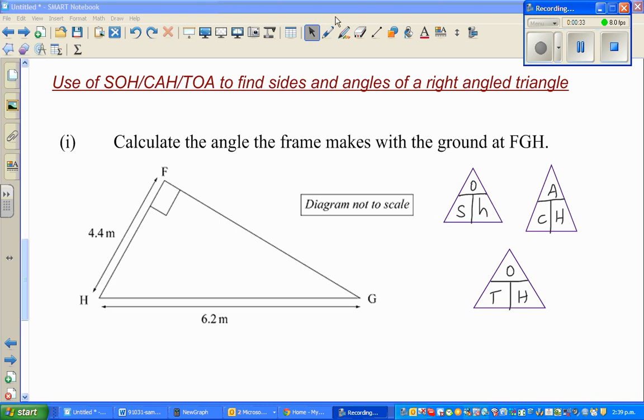To use this formula or the mnemonic, the first thing that you need to do is decide the angles and the sides. So let's read the question: Calculate the angle the frame makes with the ground FGH. So put this in simple language, they're asking you to find this angle, this angle FGH. What is that angle? That's the question.